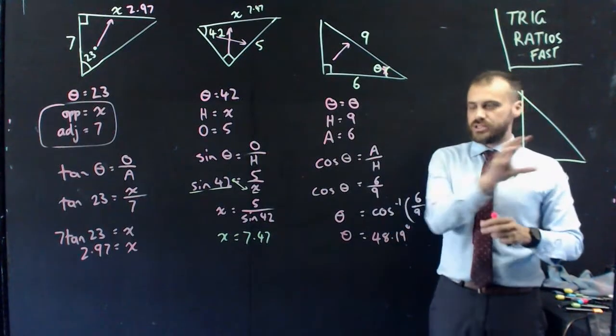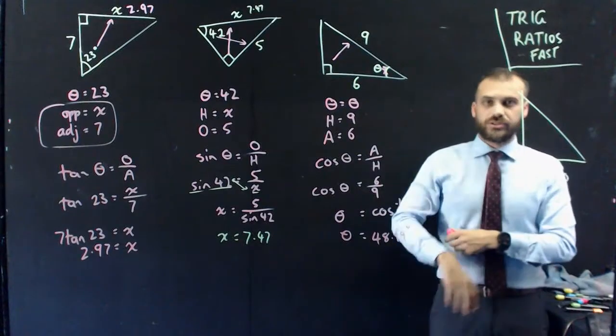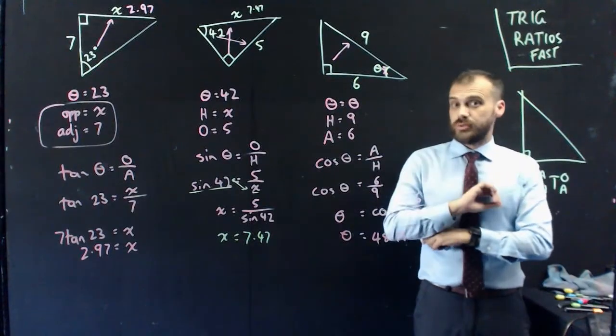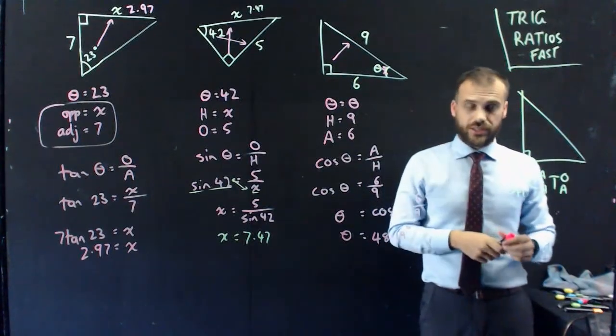All right, that's trig ratios. Really fast. SOHCAHTOA. Right angle triangles. We're going to toss out right angle triangles. We're going to do stuff without right angle triangles next.